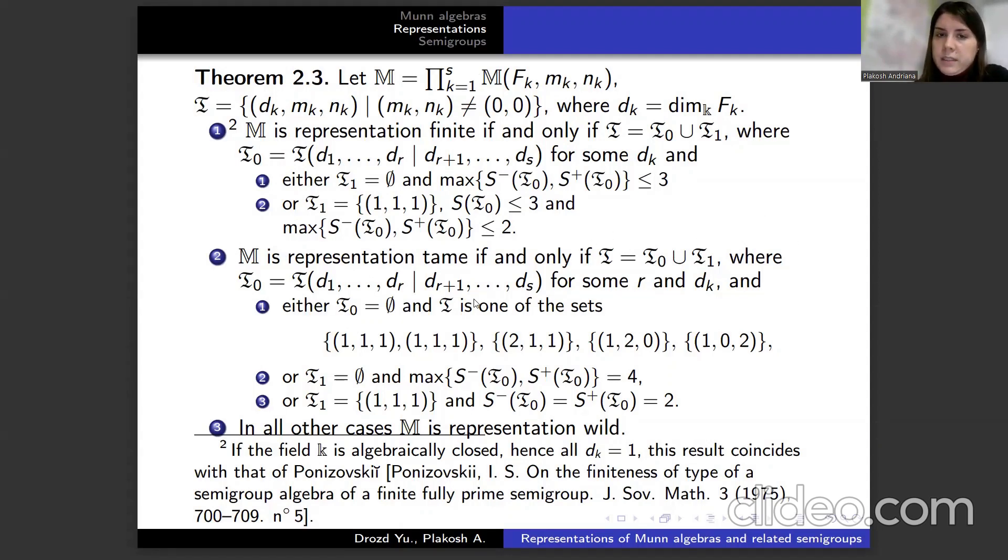Then we have three cases. M is representation finite if and only if T equals T₀ union T₁. In all other cases, M is representation wild.